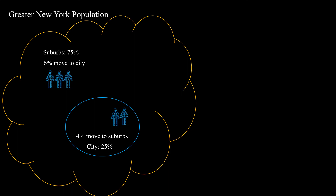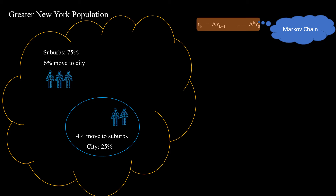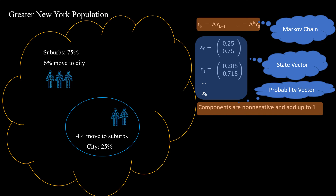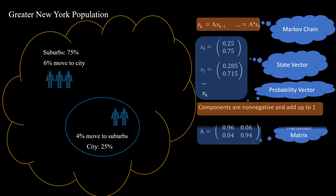Let's recap the whole process and learn some concepts. It's clear that the population in the suburbs and the city in a certain year is only reliant on last year's population, since xk equals A times x_{k-1}. This is an example of a Markov chain. The vectors x0, x1, ... are called state vectors. The components of each state vector are non-negative and add up to 1. A vector with this property is called a probability vector. The matrix A is called the transition matrix of the Markov chain.